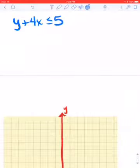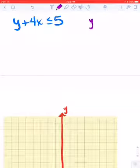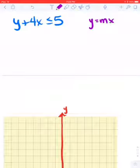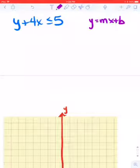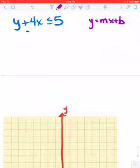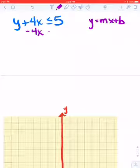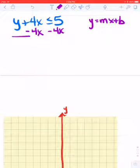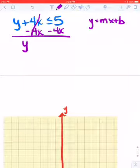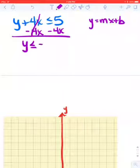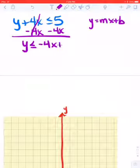Remember, we want this to be in this form to be able to graph it. So that means that at least here we know this x is in the wrong spot. So we're going to start by subtracting 4x from both sides. So y is less than or equal to negative 4x plus 5.